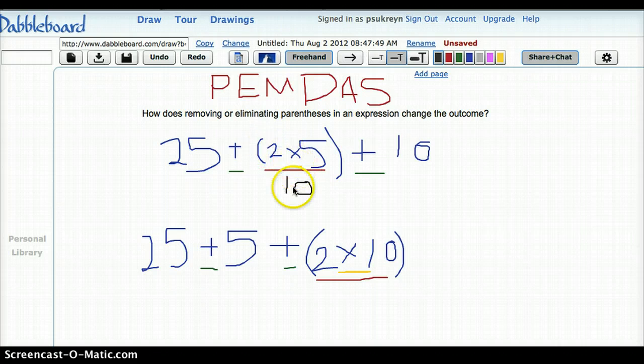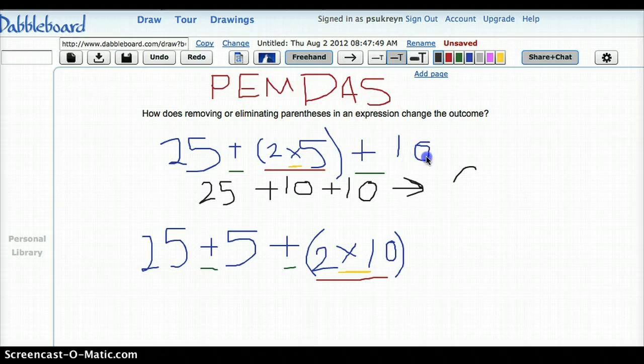So now what I'm going to do is add my tens first. 10 plus 10 is 20. Put this over here. So then we have 25 plus 20, or an answer of 45.